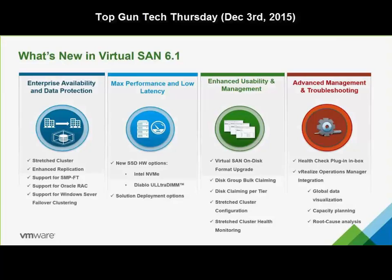I just wanted to show this slide — it's a nice summary of all the updates and new items in version 6.1 of Virtual SAN. There are quite a few of them. Under Enterprise Availability and Data Protection, we've added support for SMP fault tolerance, Oracle RAC, as well as Windows Server failover clustering. Note that SMP fault tolerance cannot be used while also using stretch cluster configurations, which we'll talk about in more detail shortly.